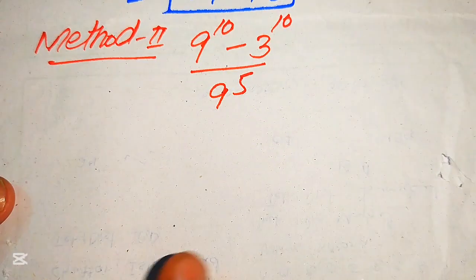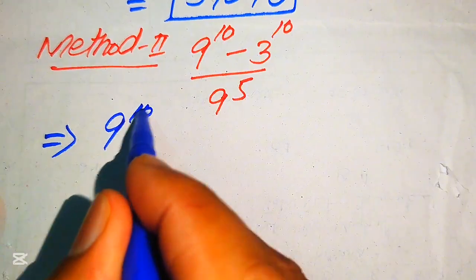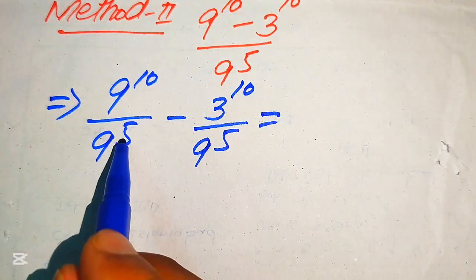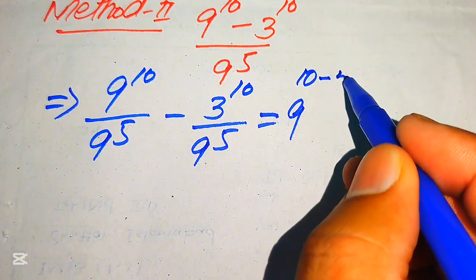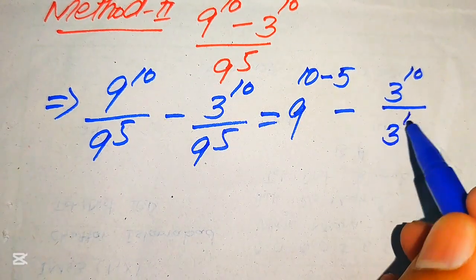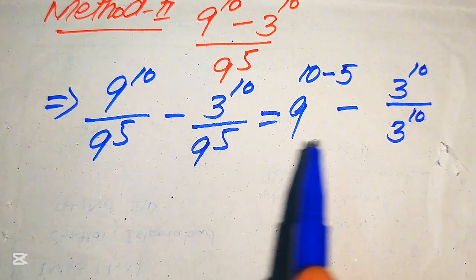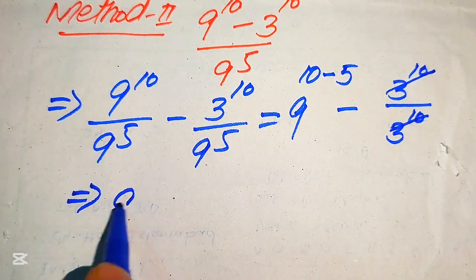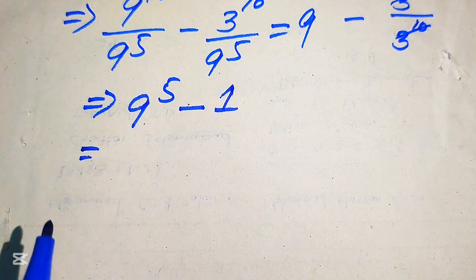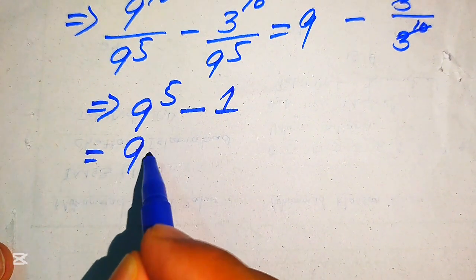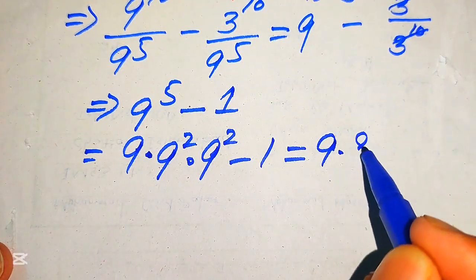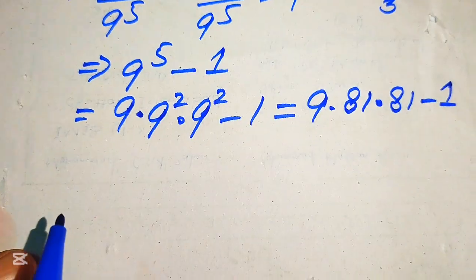In the second method, we break the fraction directly: 9 to the power of 10 divided by 9 to the power of 5, minus 3 to the power of 10 divided by 9 to the power of 5. The first term simplifies to 9 to the power of 10 minus 5, which is 9 to the power of 5. For the second term, we write 9 as 3 squared, so 9 to the power of 5 equals 3 to the power of 10, and these cancel out, leaving 9 to the power of 5 minus 1.